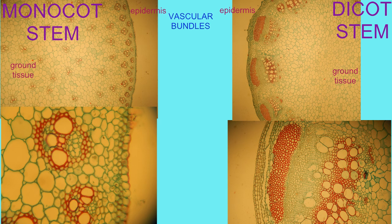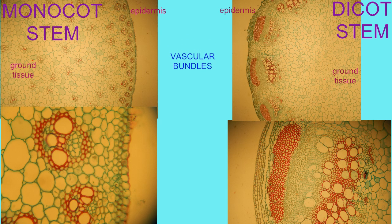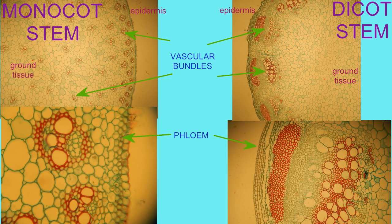In both, there are vascular bundles, where the xylem transports water and the phloem transports sugar, and the clusters of phloem sieve cells are located near the clusters of the xylem vessels.